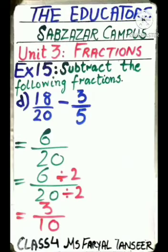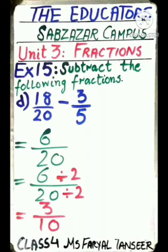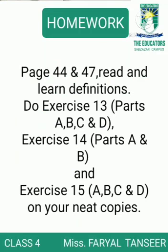Now we check if 6/20 can be further simplified. Yes, we can divide by 2: 6÷2=3 and 20÷2=10, giving 3/10. We check if 3 and 10 can be divided by any other common factor — they cannot. So the final answer in lowest form is 3/10.